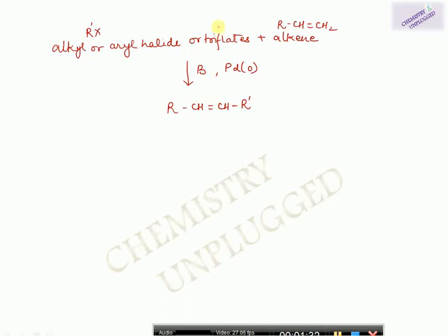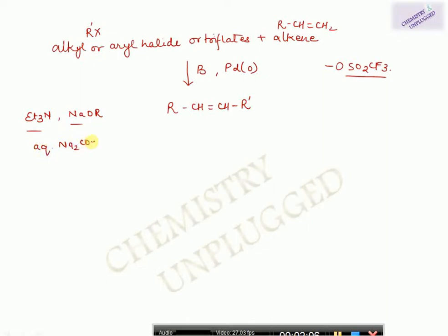You use a base and a palladium complex as a catalyst. If you have RX and alkene R'CH=CH₂, you will get R-CH=CH-R'. Triethylamine and sodium alkoxides are generally used as bases for this reaction; aqueous Na₂CO₃ can also be used.